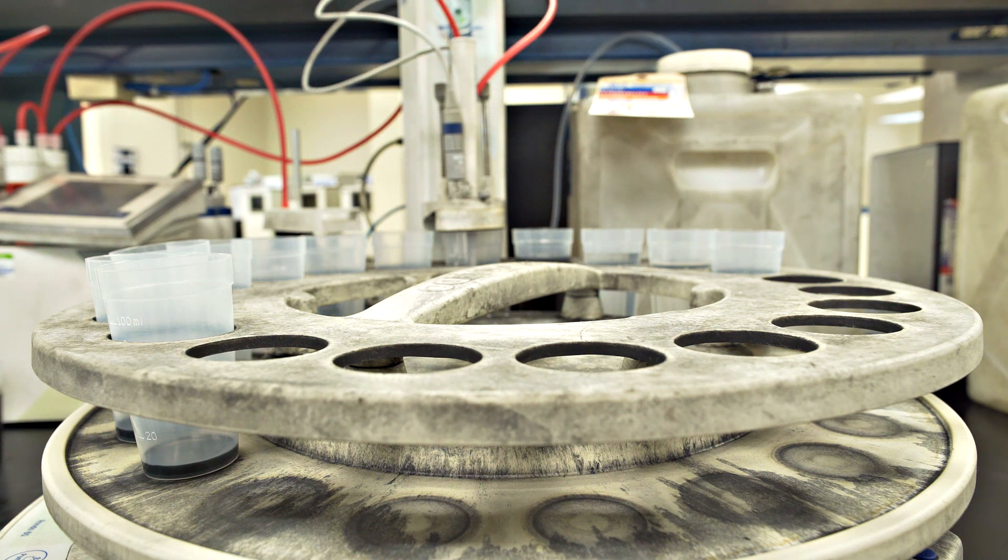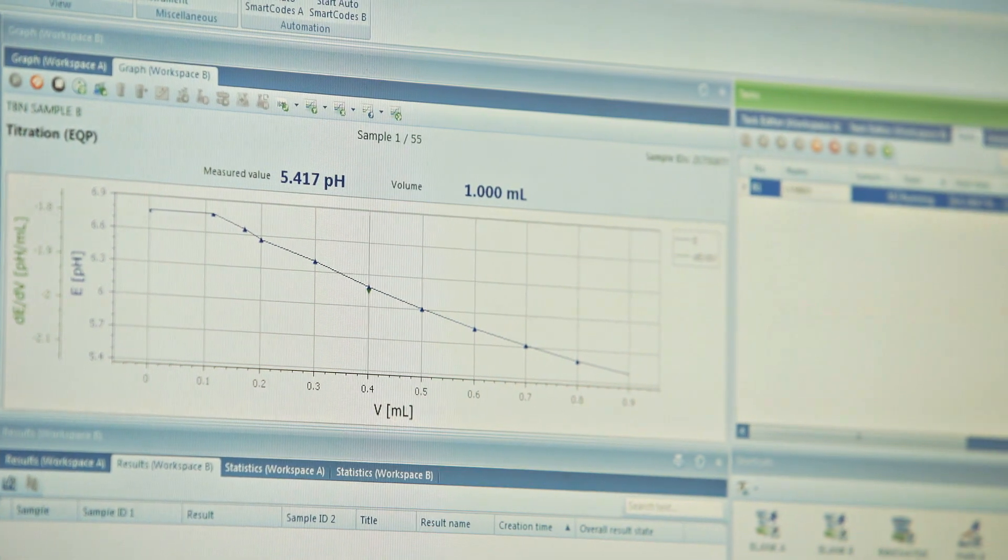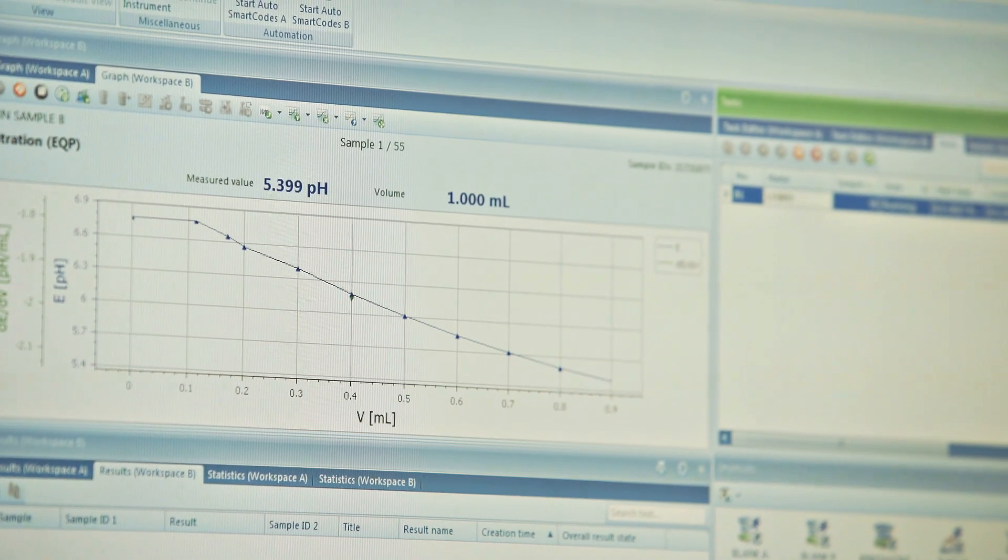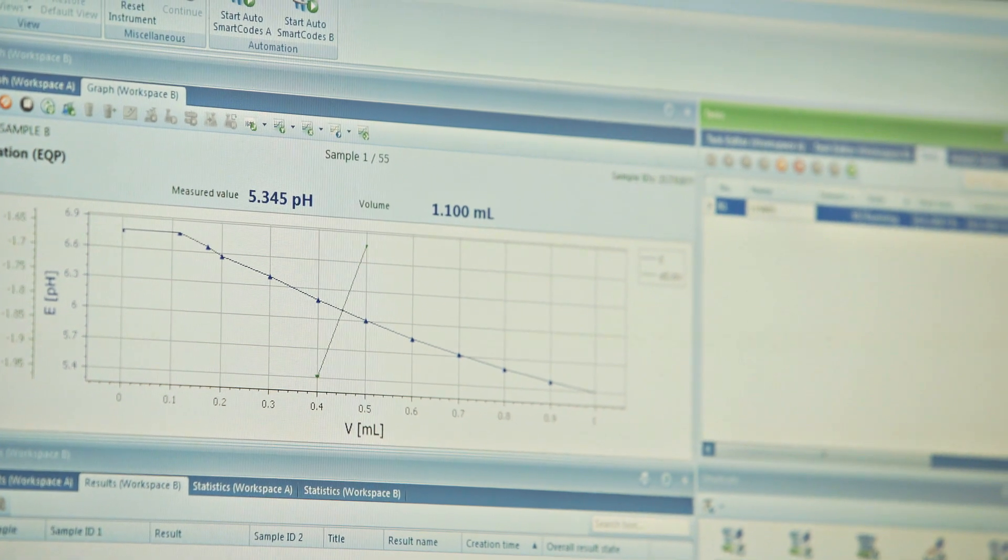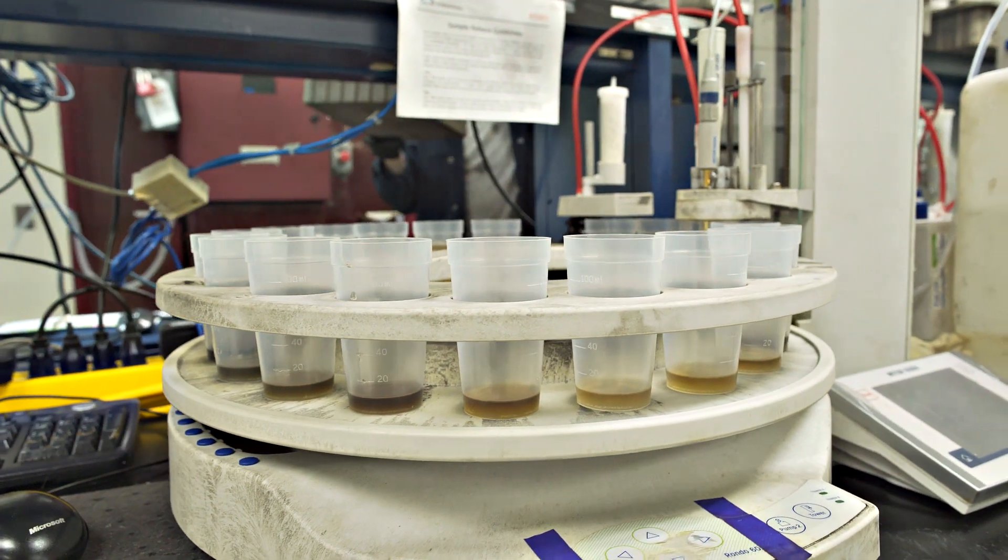The value the instrument provides is called the base number. As the base number decreases to a condemning limit, an engine oil's useful life is depleted and should be changed.